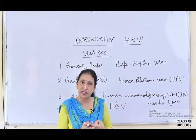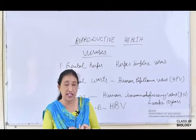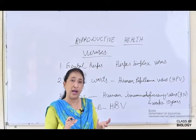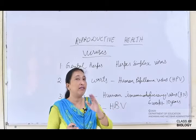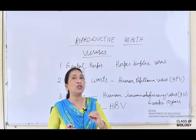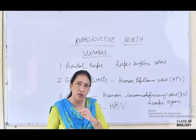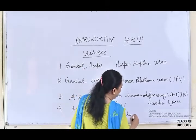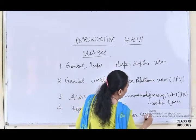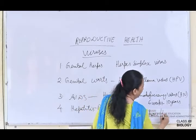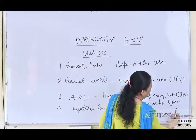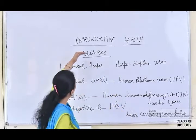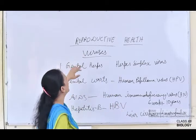Due to the HBV virus, jaundice will take place, fever will occur, and there will be abdominal pain. If it goes untreated and undiagnosed, it will lead to liver cirrhosis — failure of the liver — and the person can die. These four are the various diseases caused by viruses, that is, sexually transmitted infections.